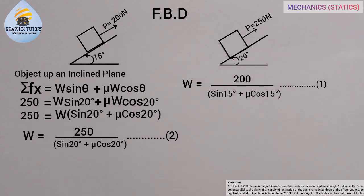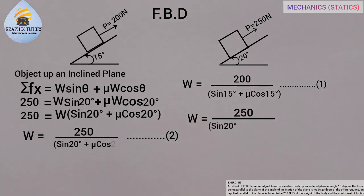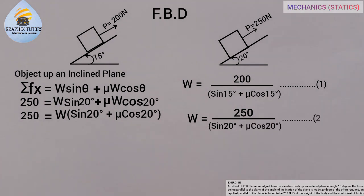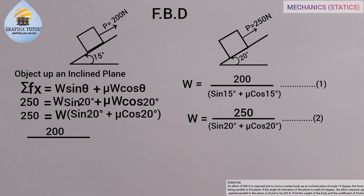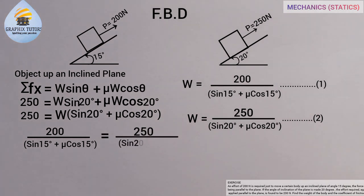Equation one gives W equals 200 over (sine 15 + mu cos 15), and equation two gives W equals 250 over (sine 20 + mu cos 20). Since W is the same in both equations, we can equate them: 200 over (sine 15 + mu cos 15) equals 250 over (sine 20 + mu cos 20).